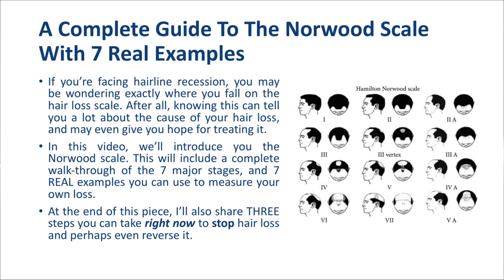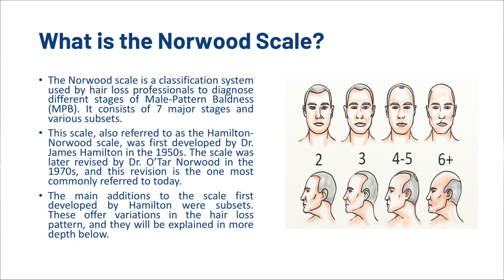What is the Norwood Scale? The Norwood Scale is a classification system used by hair loss professionals to diagnose different stages of male pattern baldness. It consists of 7 major stages and various subsets. This scale, also referred to as the Hamilton Norwood Scale, was first developed by Dr. James Hamilton in the 1950s. The scale was later revised by Dr. Otan Norwood in the 1970s, and this revision is the one most commonly referred to today. The main additions were subsets, which offered variations in the hair loss pattern.